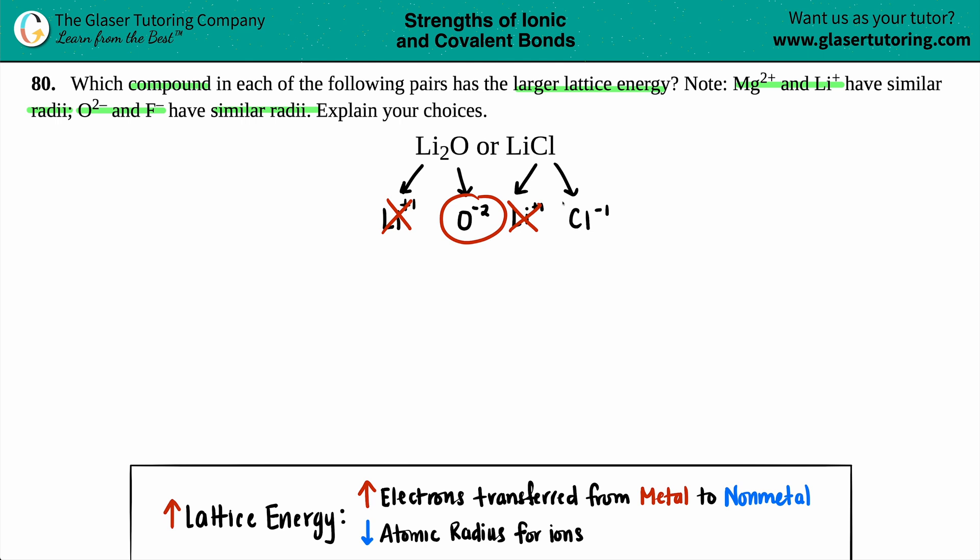Well, we can use either one of these trends. Let's just look for the electrons transferred. In this case, we have O2- and we have Cl-.